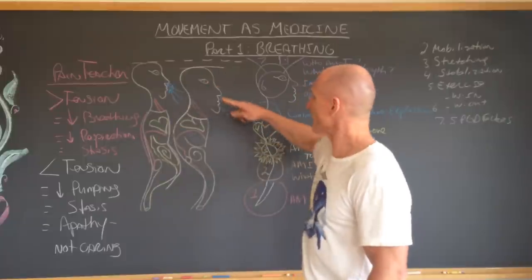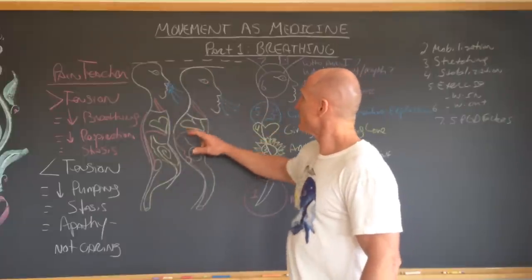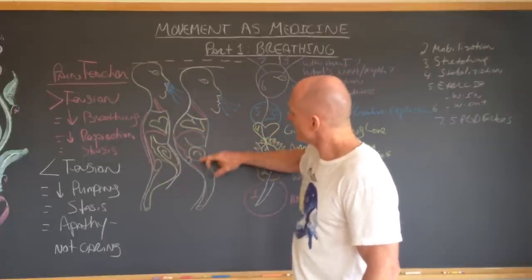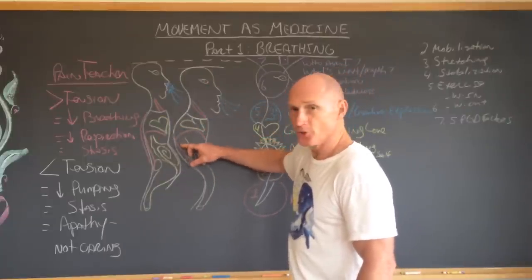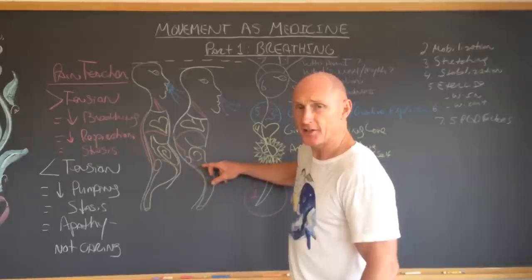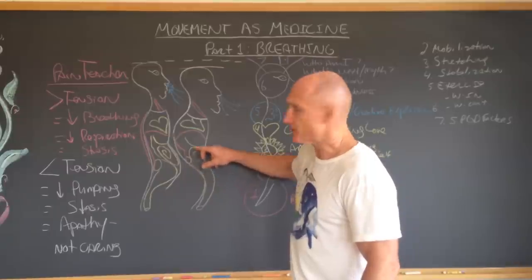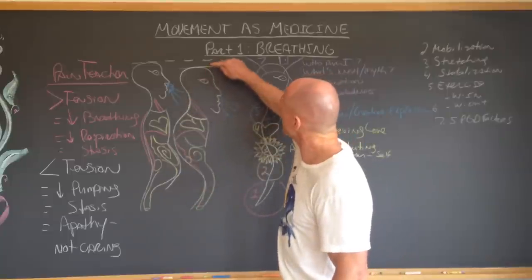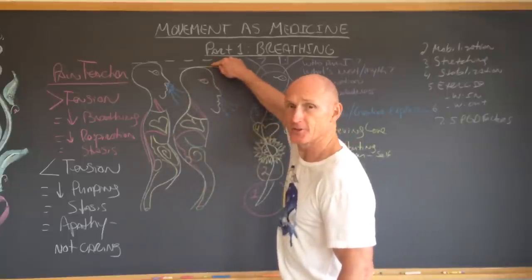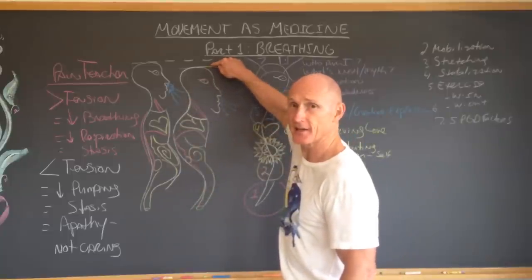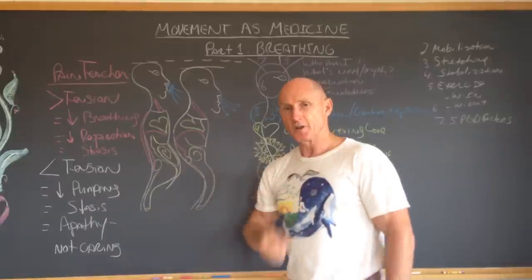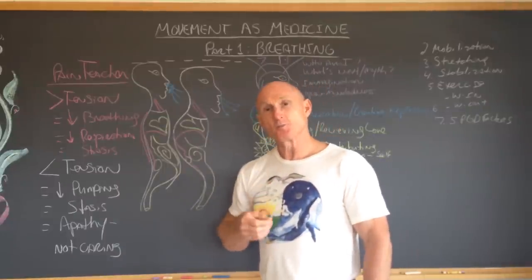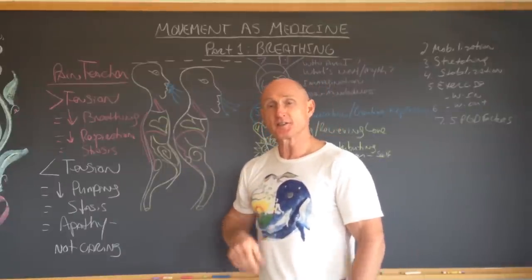When you exhale, the diaphragm relaxes and rises up. You don't have tension in the cura, or the tendons of the diaphragm, and the spinal curves increase, so the spine gets shorter.